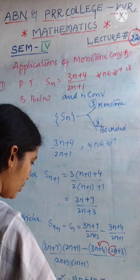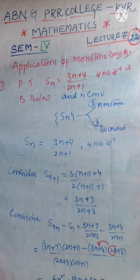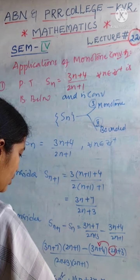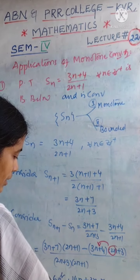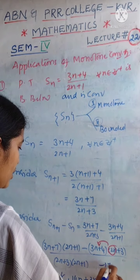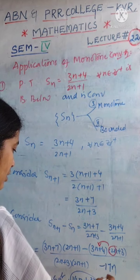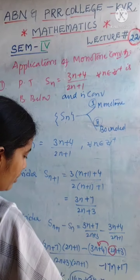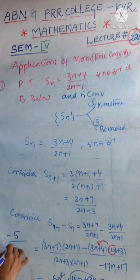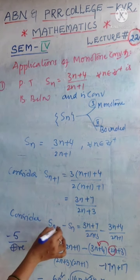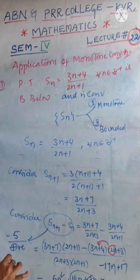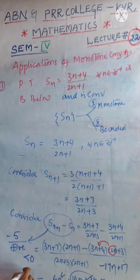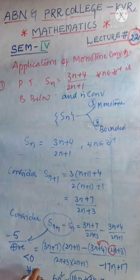The denominator is (2n+3)(2n+1), which is always positive. Now, in the numerator, 6n² cancels out, and 17n cancels out as well, leaving 7 minus 12, which equals minus 5. So Sn+1 minus Sn equals −5 divided by (2n+3)(2n+1), which is negative divided by positive — this value is obviously negative, less than 0 for every n.